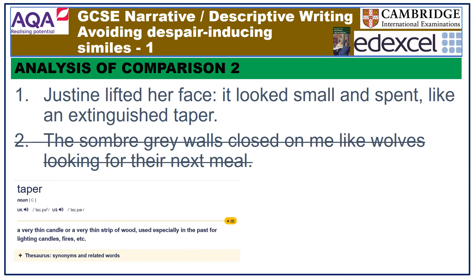But I much prefer the first simile. I like the precision within the sentence as a whole — the crisp colon which ushers in more information about Justine's face. This simile illustrates that your sentence or phrase doesn't necessarily need to be long or complex in order to be effective. When the flame from a taper is put out, there is usually a miserable wisp of smoke left — a far cry from the power and glory of a flame. Thus, this simile in an interesting, original way suggests that all the light and vibrancy has come out of poor, dear Justine's face.